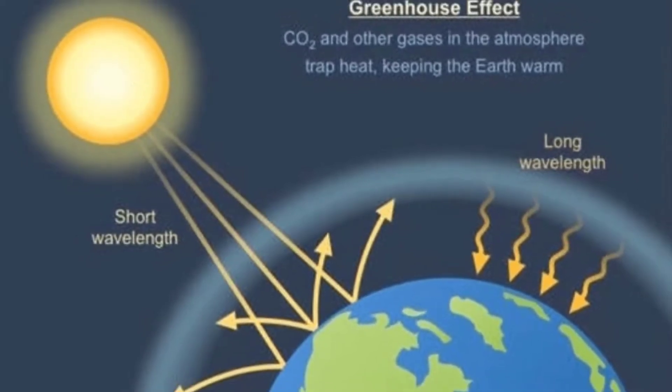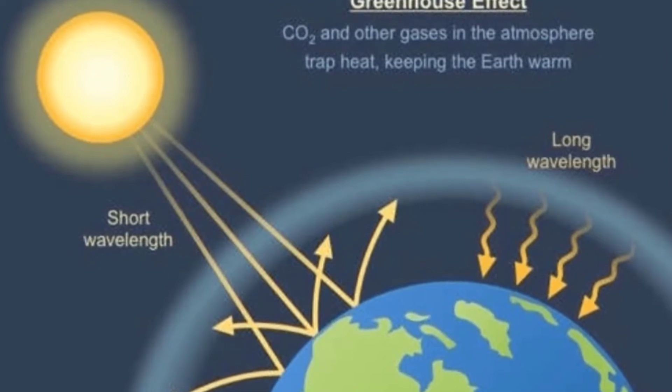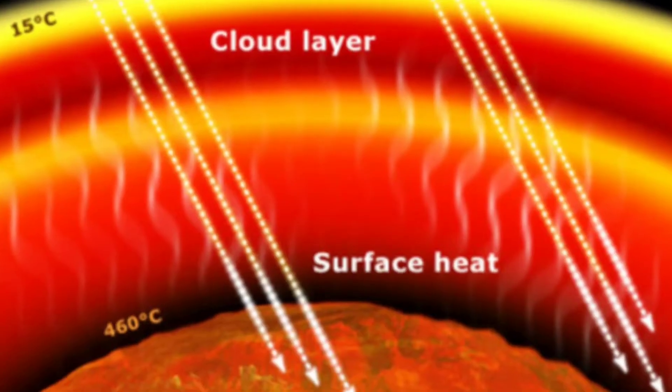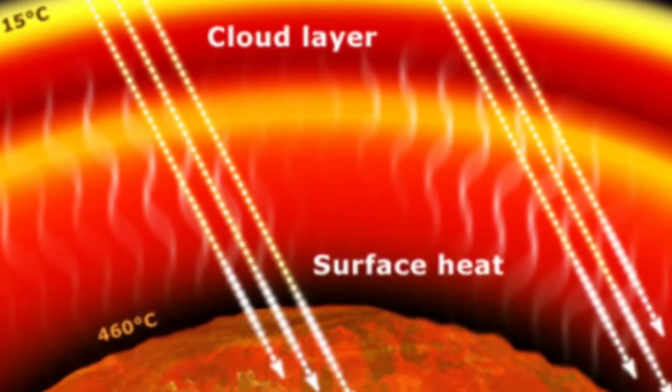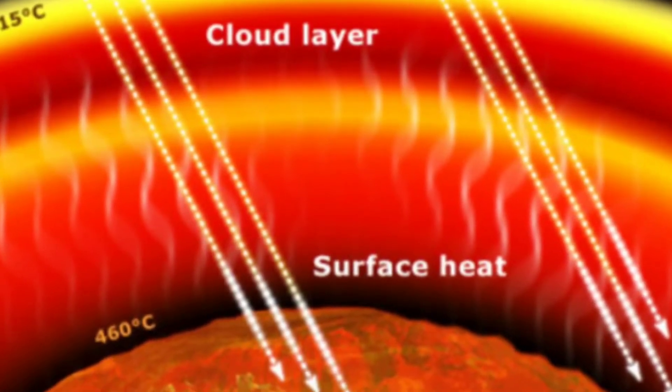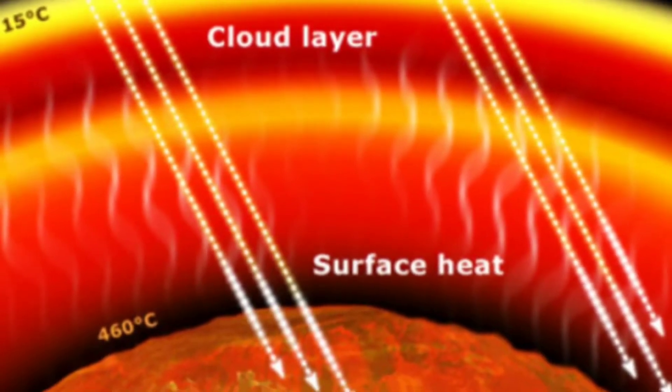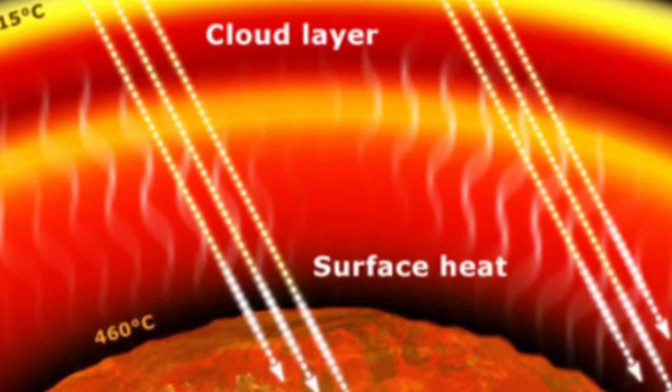Although Earth and Venus are the right size to hold a sufficient atmosphere, Venus's atmosphere is 100 times thicker than Earth's. It is made almost entirely of greenhouse gases, making the surface too hot for life to thrive. Trivia: Venus is the hottest planet due to its thick atmosphere.